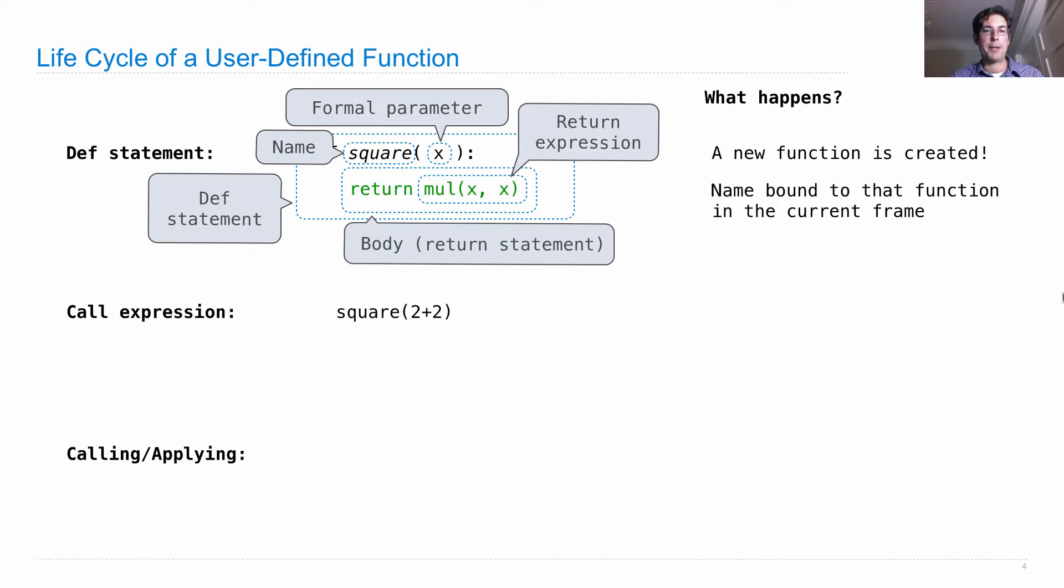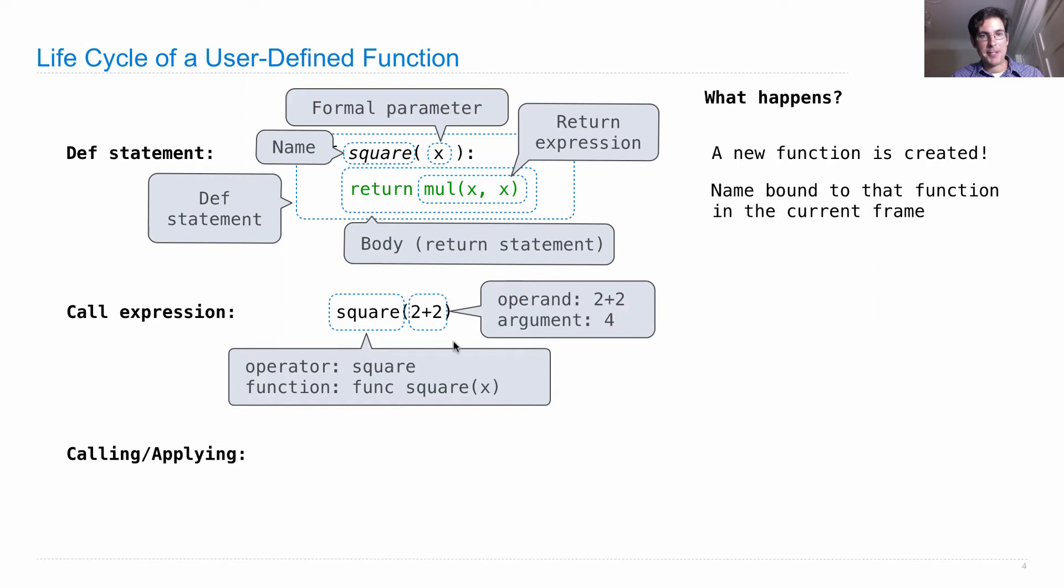We call it with a call expression that looks like this, square(2 + 2). This has an operator as part of the call expression before the parentheses. So the operator is the name square. The value of the operator is a function, the square function. Within environment diagrams, we write functions as func, and then the signature, which is the name, followed by the formal parameters. The operand is the expression within parentheses, so 2 + 2. Evaluating it gives us the argument 4, and that's what we're going to square. So operators and operands are evaluated first whenever we want to evaluate a call expression.